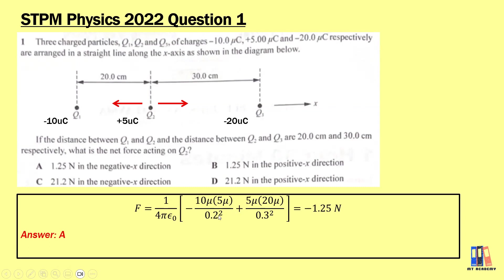When we do the calculation, we input all the magnitudes of the charges and the distances — for example, 10 µC multiplied by 5 µC, divided by the square of the distance, 20 cm (remember to convert to meters). There is a negative sign to show the direction is to the left, and the second term is positive because it is to the right. Doing the calculation gives negative 1.25 N, showing the net force is in the negative x direction. Answer is A.